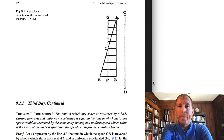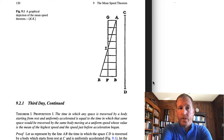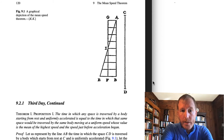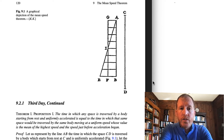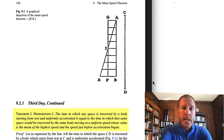So now, what is this mean speed theorem? It's a fairly simple idea, and Galileo explains it using a picture — that is figure 9.1. Let me just read what his Theorem 1, Proposition 1 is, which is a statement of the mean speed theorem. He says: "The time in which any space is traversed by a body starting from rest and uniformly accelerated is equal to the time in which that same space would be traversed by the same body moving at a uniform speed, whose value is the mean of the highest speed and the speed just before the acceleration began."